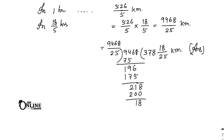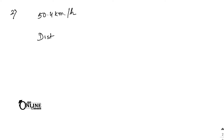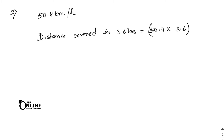Number two: if the speed of a car is 50.4 kilometer per hour, find the distance covered in 3.6 hours. Distance = 50.4 × 3.6 = 181.44 kilometer. That is your answer.